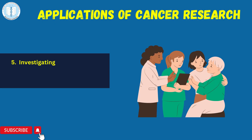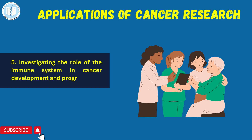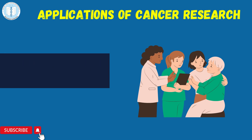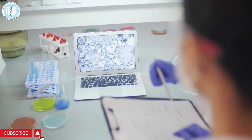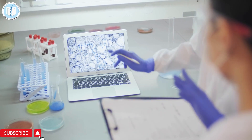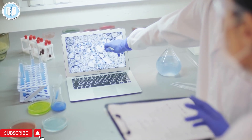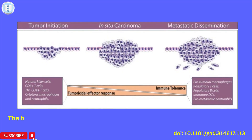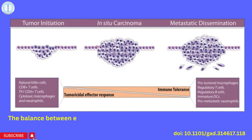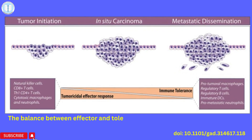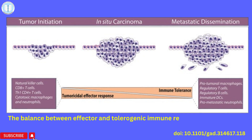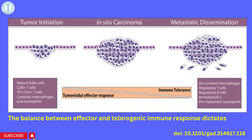Fifth is investigating the role of the immune system in cancer development and progression. Tumor development can be controlled by cytotoxic innate and adaptive immune cells. However, as the tumor develops from neoplastic tissue to clinically detectable tumors, cancer cells evolve different mechanisms that mimic peripheral immune tolerance in order to avoid tumoricidal attack.